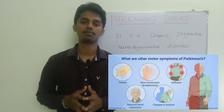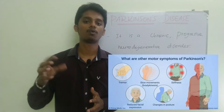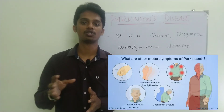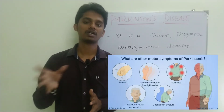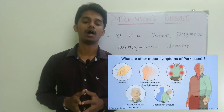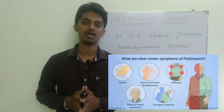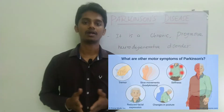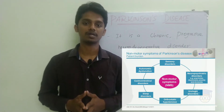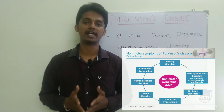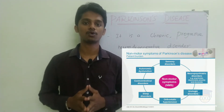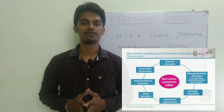Motor symptoms are movement-related. Examples of motor disability include bradykinesia, tremor, and rigidity. Non-motor symptoms include excessive salivation, postural instability and gait, sleep disturbances like insomnia, and also autonomic dysfunctions.